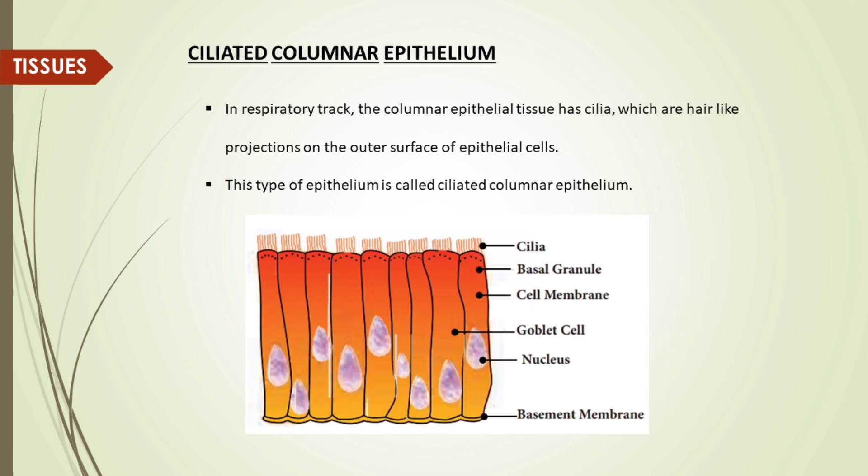Ciliated columnar epithelium: in the respiratory tract, the columnar epithelial tissue has cilia, which are hair-like projections on the outer surface of epithelial cells. This type of epithelium is called ciliated columnar epithelium.